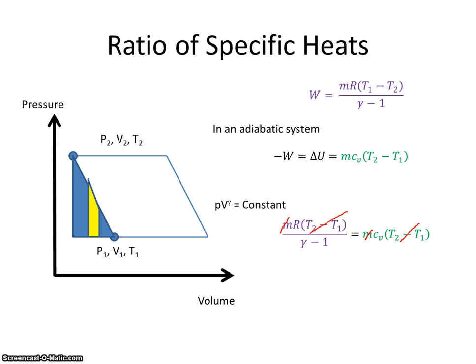And we immediately can cancel all those. So I get r over gamma minus 1 is equal to cv.